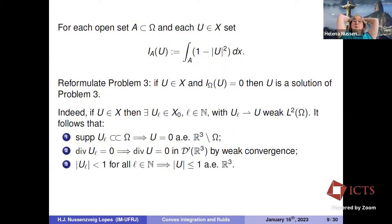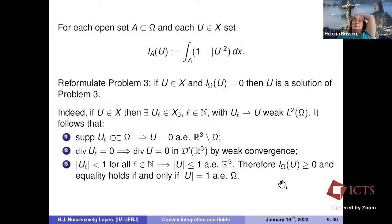Since u is bounded by one and supported inside omega, if I_omega(u) equals zero, then the integral on omega of the non-negative quantity (1 minus |u|²) is zero, which means the integrand must be zero, so |u| equals one almost everywhere in omega. This completes the argument that finding u in X with I_omega(u) = 0 gives a solution to problem three.